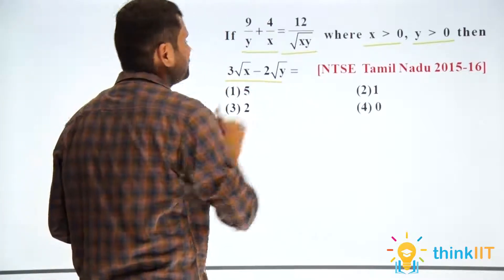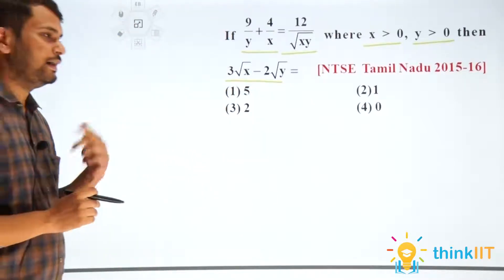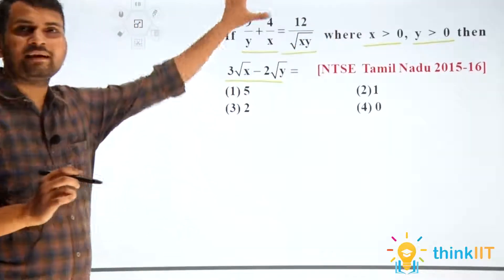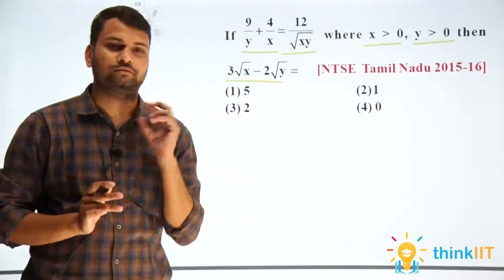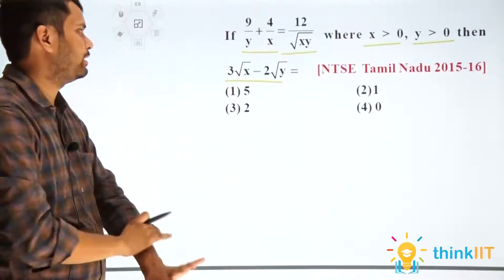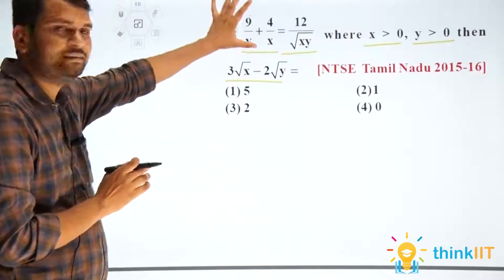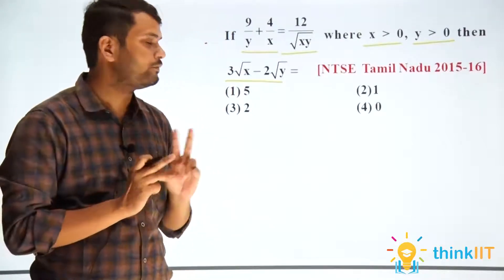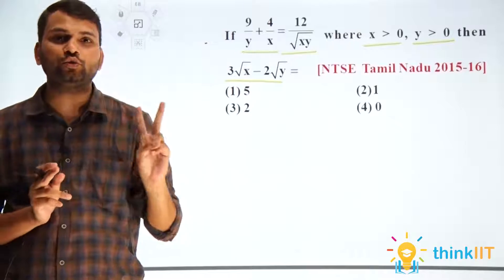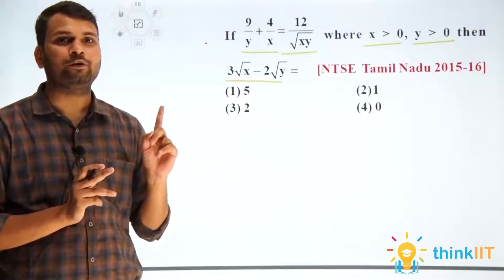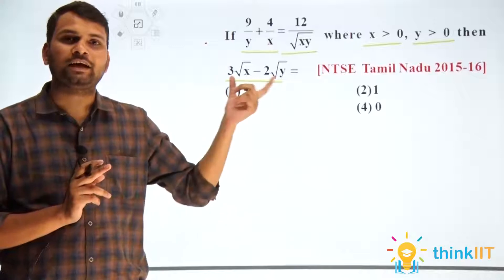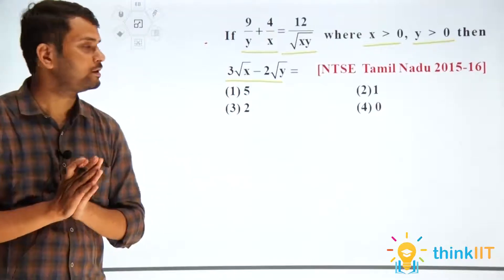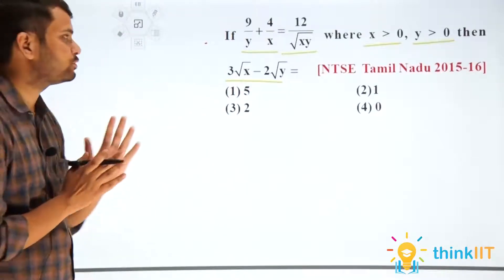Then 3 root x minus 2 root y is equal to what? In this question, you may be confused that the given expression is an equation. Although it cannot be linear or maybe quadratic. But the given condition is only one equation and two variables. So we have to find out the value of x and y — we need two equations to solve, but we have only one equation and we have to find the value of a given expression. This means the question may have some concept.